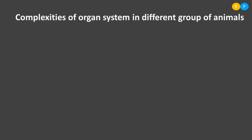For example, take the digestive system. The kind of digestive system seen in higher animals like human beings and birds is not present in some of the lower invertebrate animals. So there is complexity in some organ systems among animals, and based on differences in the organ system, animals are divided into different types. Let us now understand these complexities of organ systems in different groups of animals.